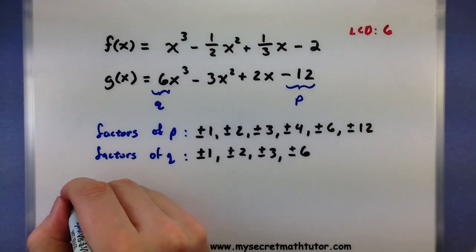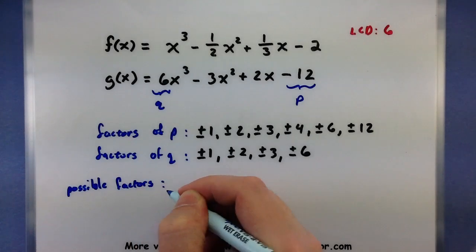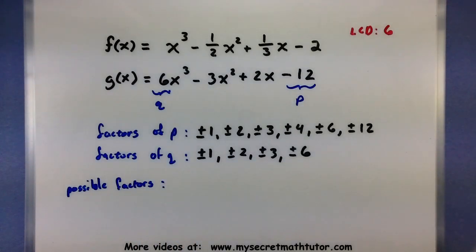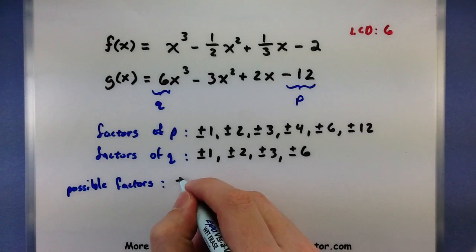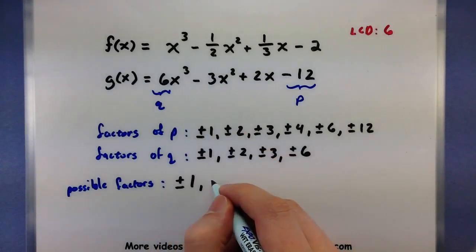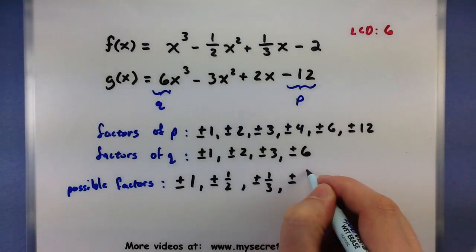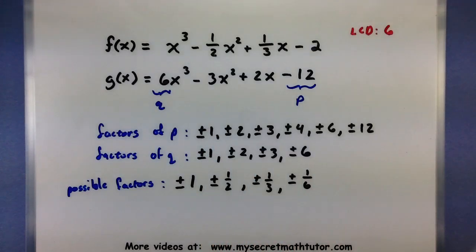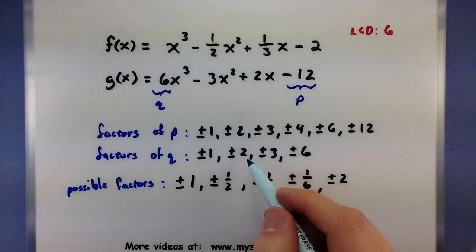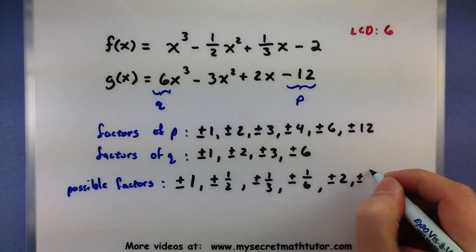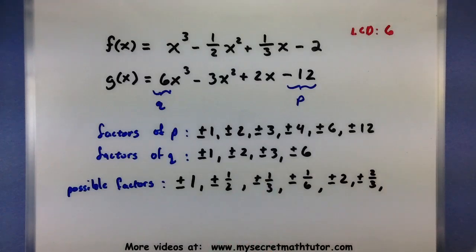Possible factors, we have lots and lots of fractions to make. So you'll take each one of these and put it over each one of these. Plus minus 1, 1 over 1, plus minus 1 half, plus minus 1 third, plus minus 1 sixth. Alright, so I've taken the 1, put it over all of these four. Now I move on to the 2. 2 over 1 is plus minus 2. 2 over 2 is 1, so I already have that. Plus minus 2 thirds. And 2 over 6 is the same as 1 third. I already have that one as well.